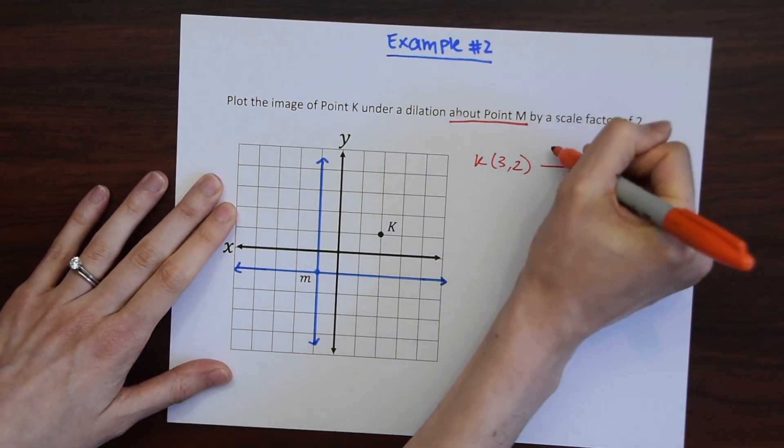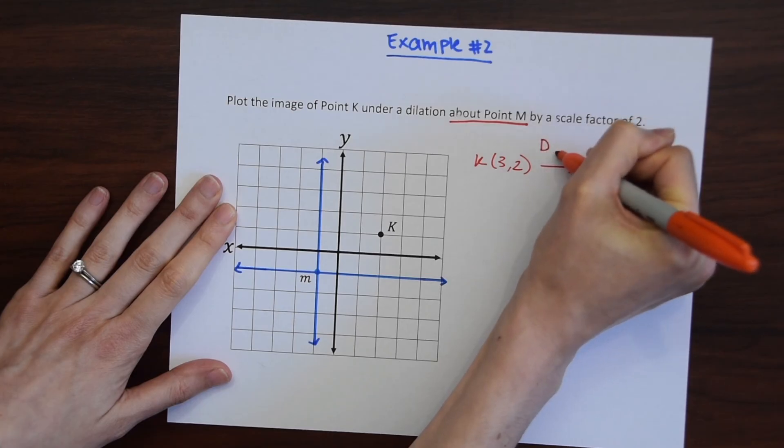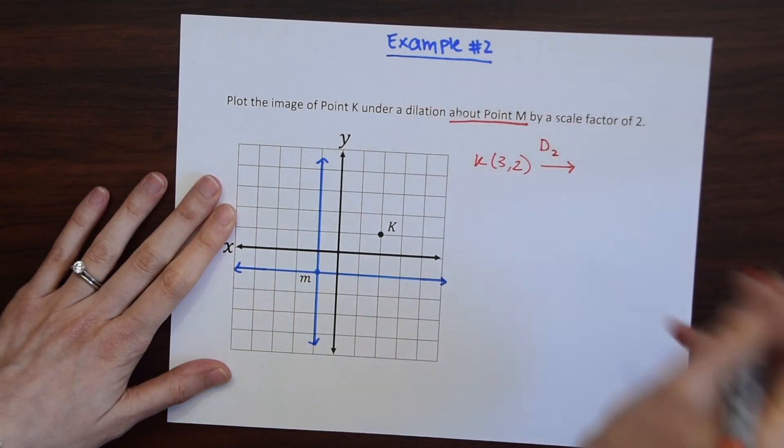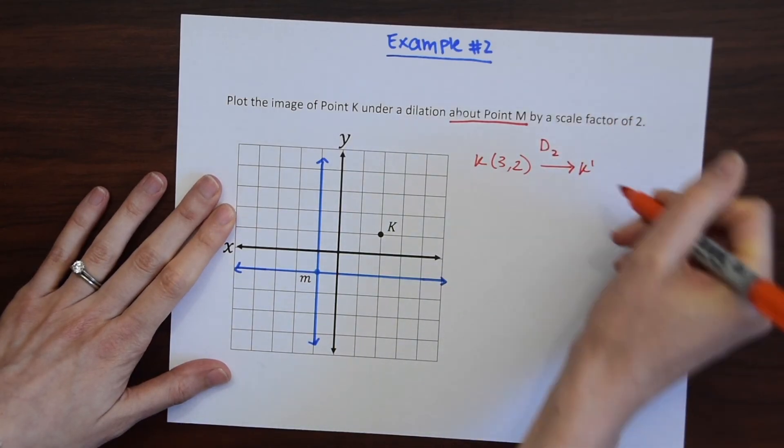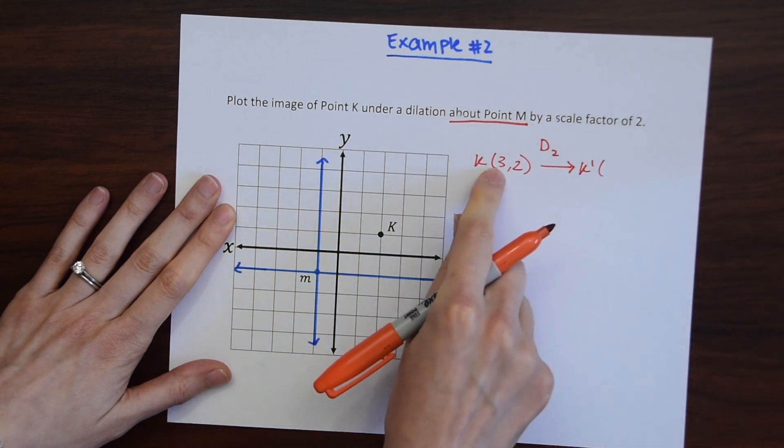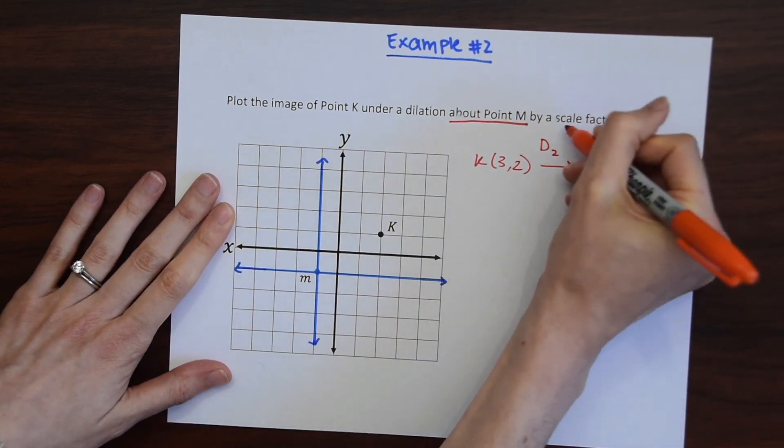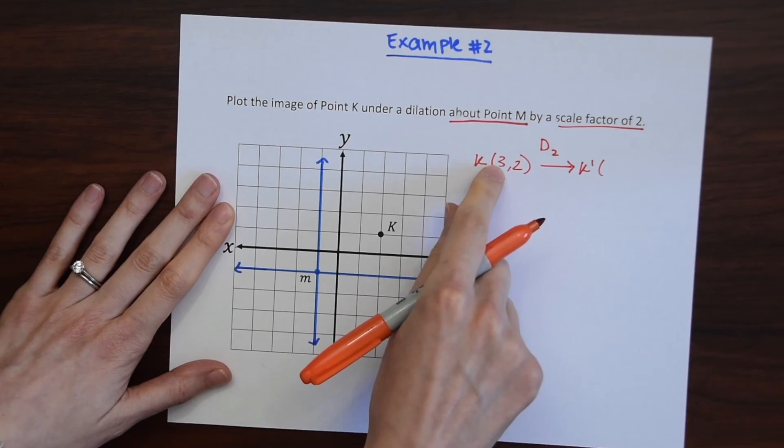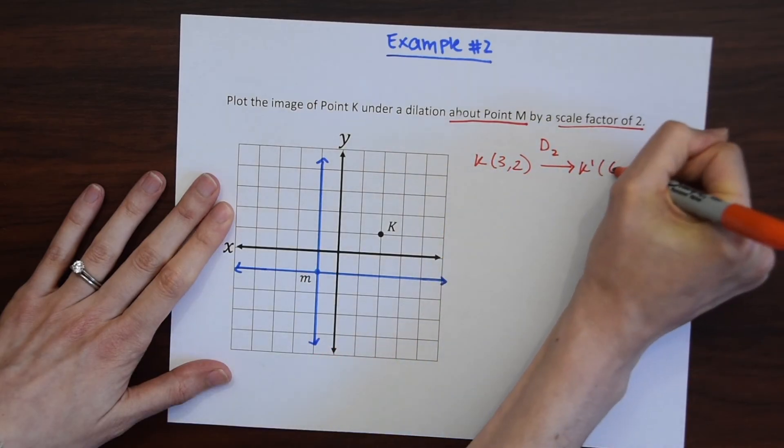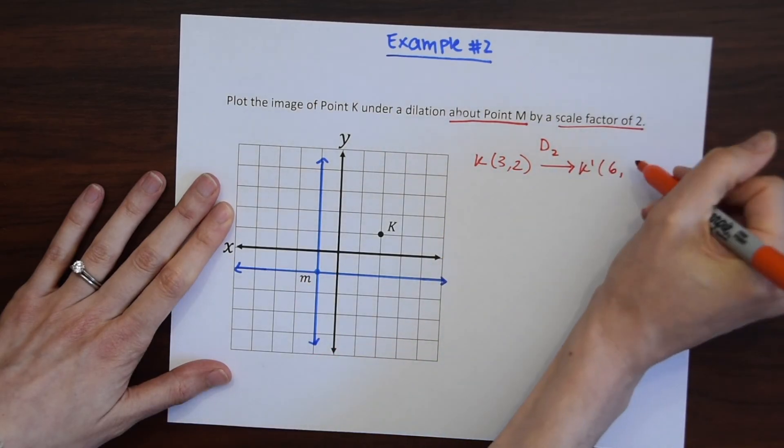So now if it's going under the scale factor of two, the dilation of a scale factor of two, what we do is we multiply each coordinate point by the scale factor, by two. So when we do that we get 3 times 2 is 6 and then 2 times 2 is 4.